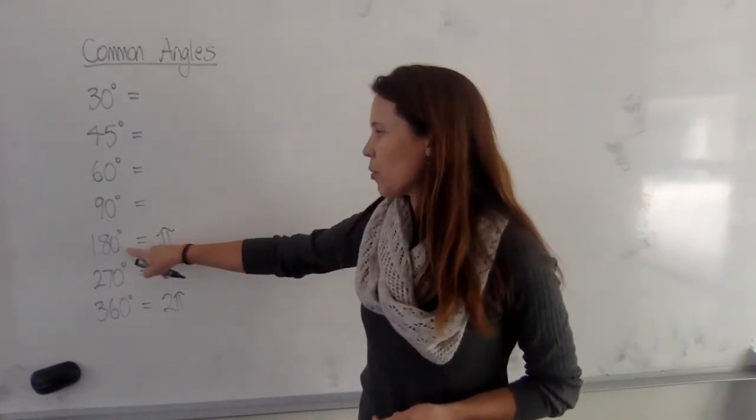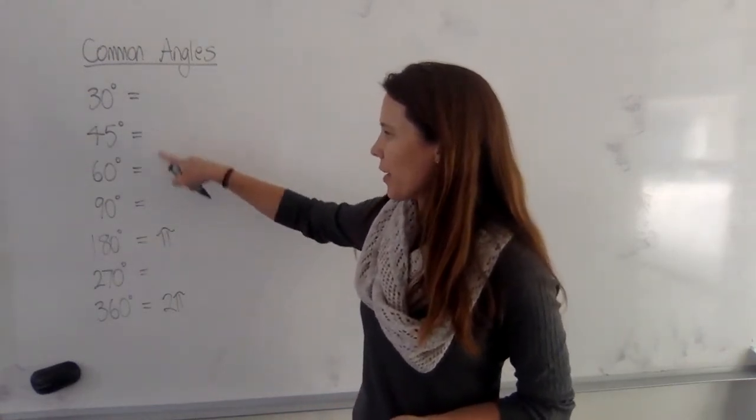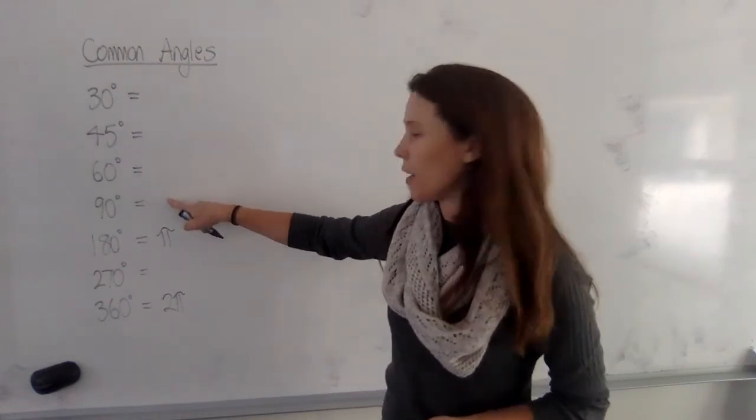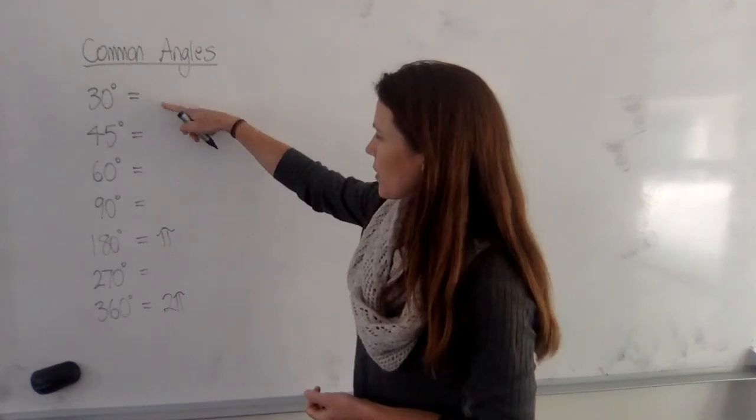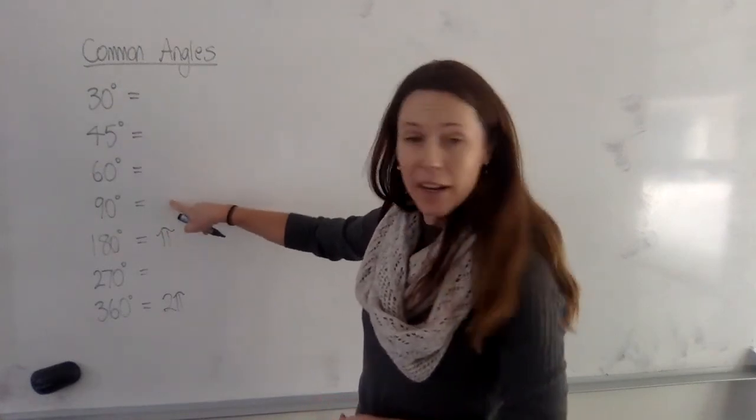Now if you use this as a starting point, you'll notice that a lot of our other important angles actually are factors of 180. So if you've got, say, 90 degrees, that's going to be half of pi.